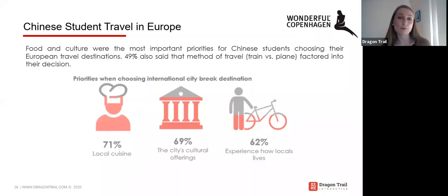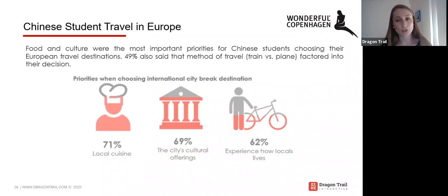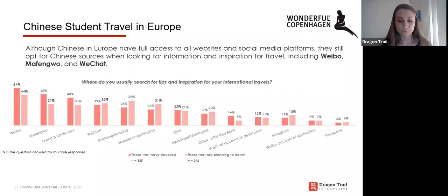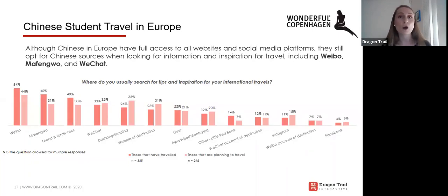Method of travel was also important — about half of students said whether a destination is accessible by train or plane affected their decision. This may explain why Paris is so far ahead of other destinations, as it is easily accessible from the UK by train. Regarding digital marketing, even though Chinese students in the UK have access to the full internet without the Great Firewall, they still prefer to use Chinese channels. Weibo, Mafengwo, WeChat, and Dianping all led the way as sources of travel planning information.